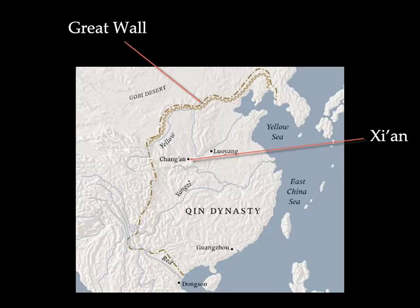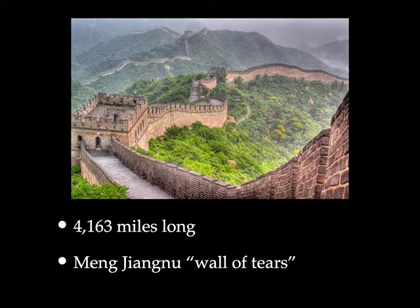He was also very controlling over the populace, conscripting them into massive projects, one of which is famous today as the Great Wall of China. The Great Wall of China as we see it today is actually mostly an edifice created much later in the Ming dynasty, but the general outline and structure of it was established way back in the Qin dynasty.